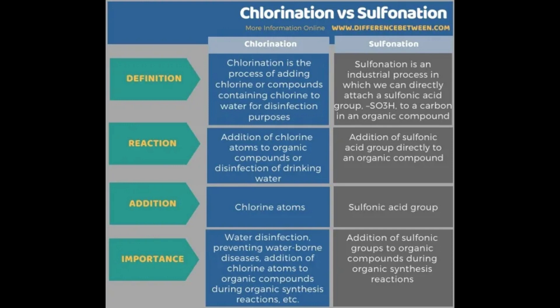These active chlorine species are highly effective in breaking down the cell walls and metabolic processes of microorganisms, rendering them harmless. Chlorination helps prevent the spread of waterborne diseases and ensures water is safe to drink. However, it's important to use the appropriate chlorine concentration and maintain proper contact time to achieve effective disinfection without the formation of harmful disinfection by-products. Water treatment facilities carefully monitor and regulate the chlorination process to ensure both safety and effectiveness.